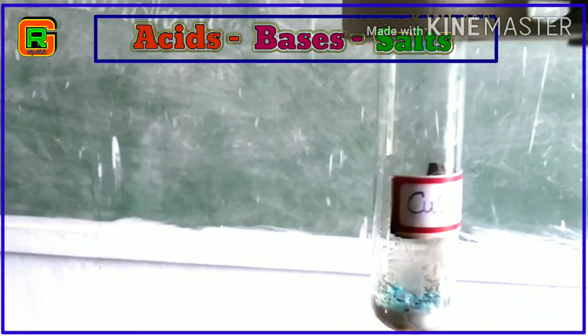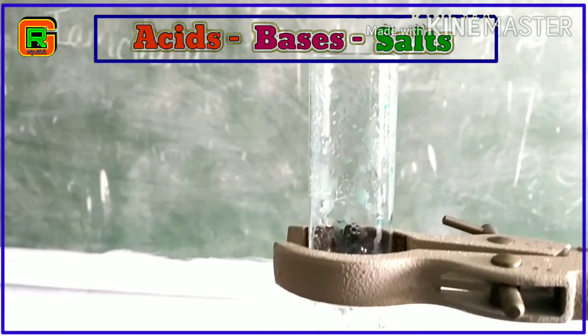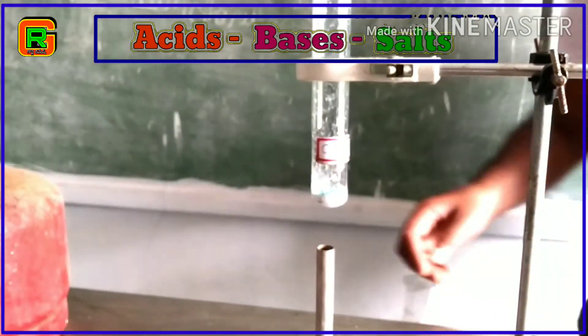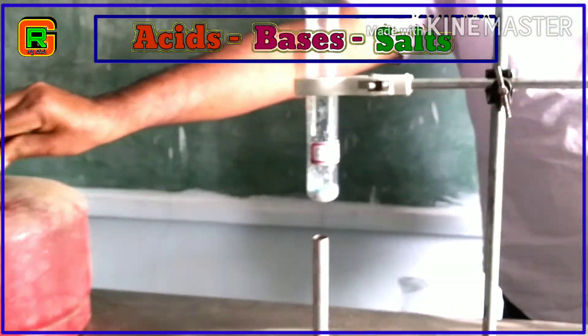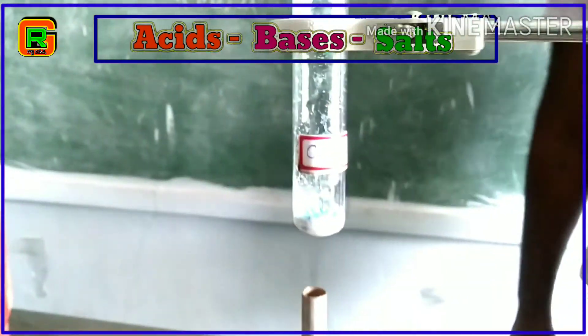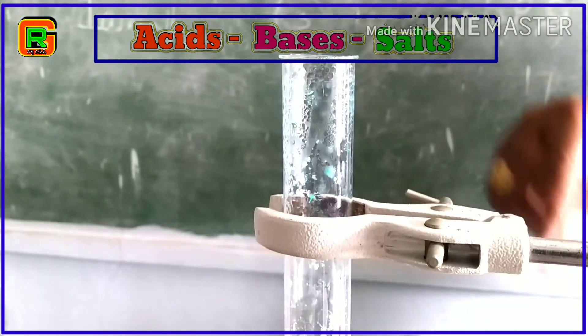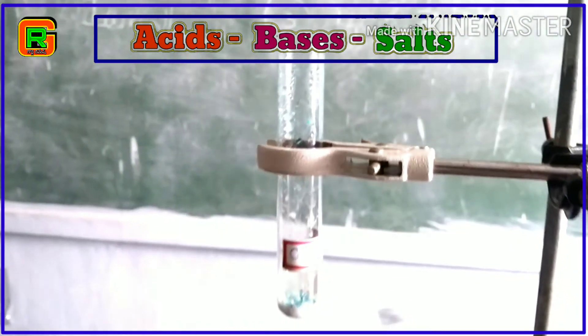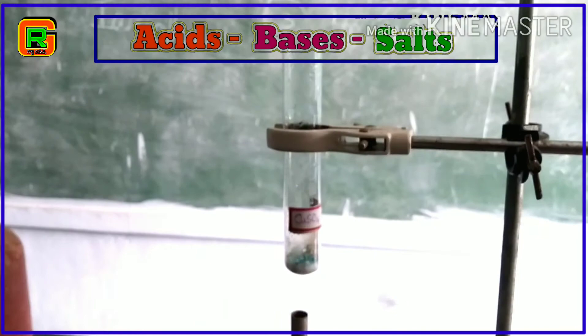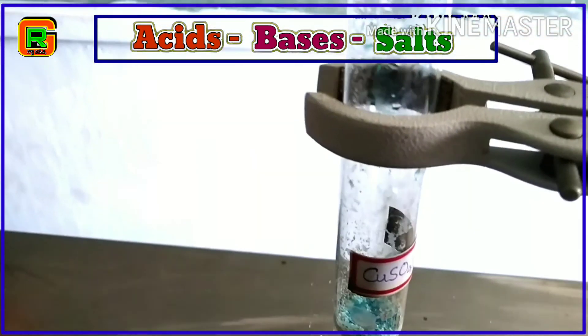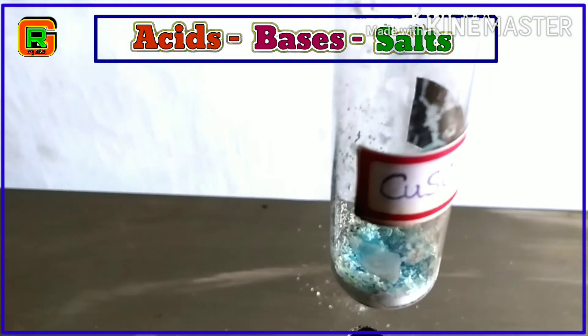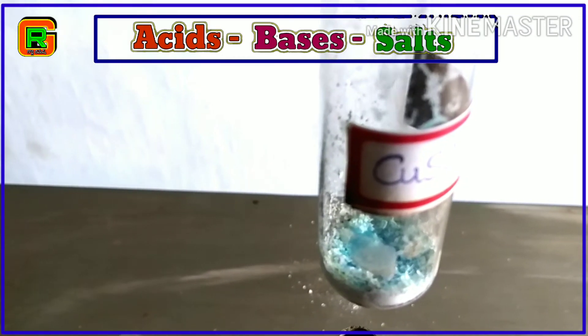Where did these water droplets come from? Yes, these are the water molecules evaporated from the copper sulphate salt. If we add 2–3 drops of water on the sample of copper sulphate obtained after heating, what do you observe? Is the blue color of the copper sulphate restored? Yes.